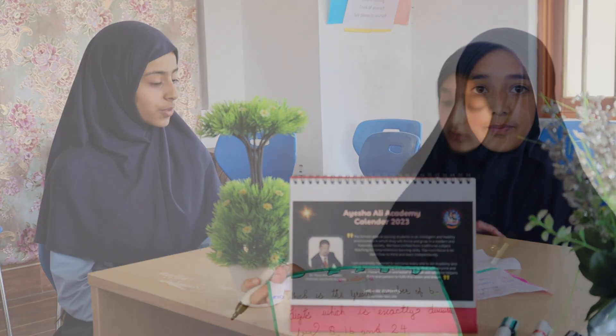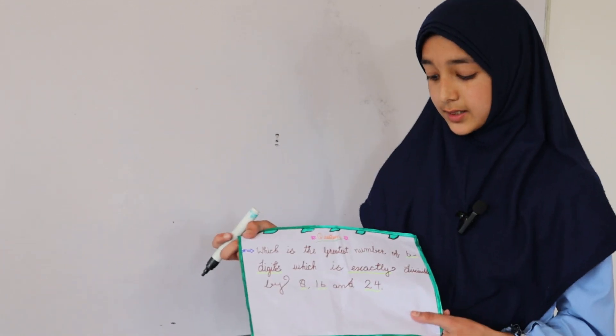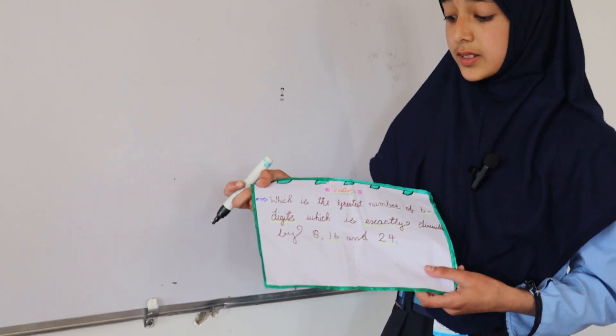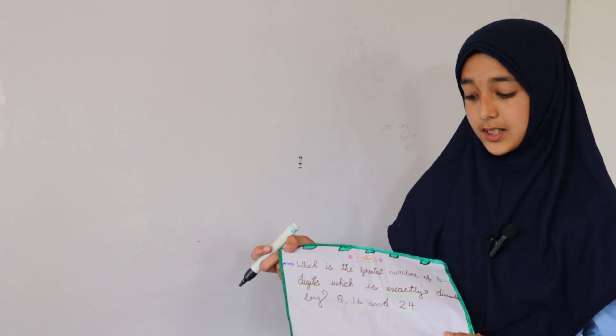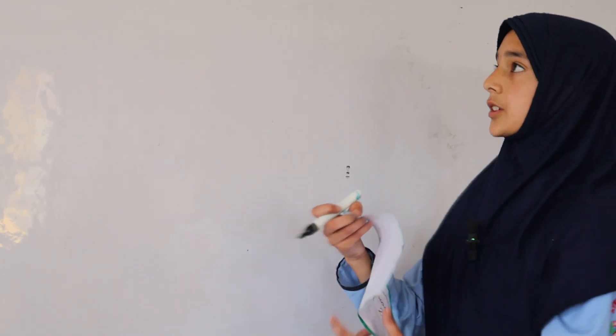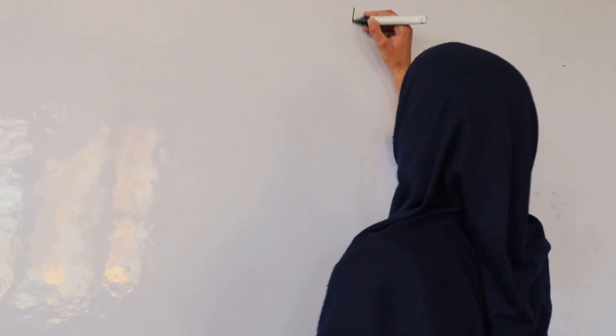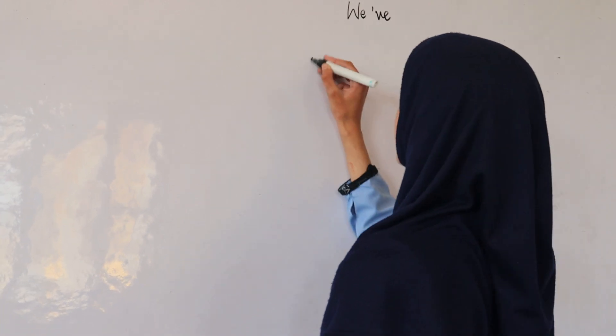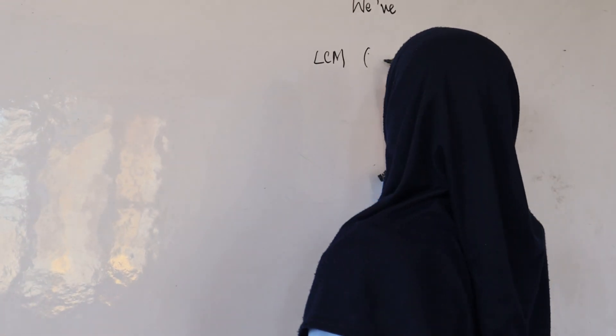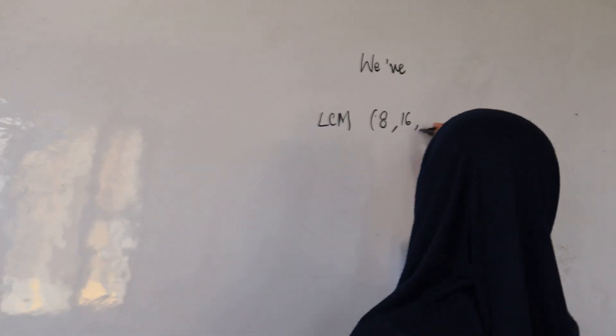Thank you for the information. Can I ask you a question? Sure. So can you tell me which is the greatest 6-digit number which is exactly divisible by 8, 16, and 24? Okay, I will show you. First of all, we have to find the LCM of 8, 16, and 24.